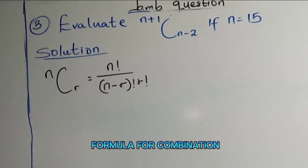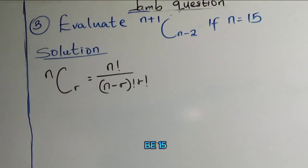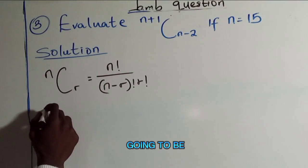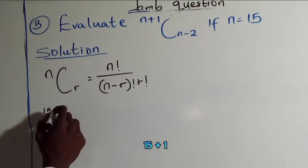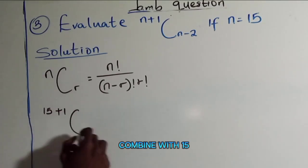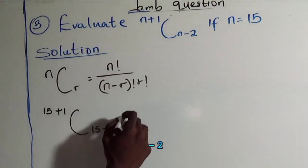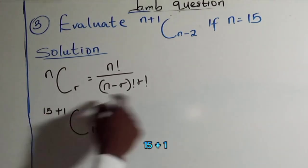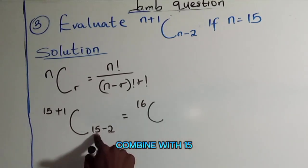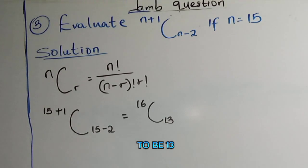We have been given n to be 15, so we substitute: that gives us 15 plus 1 combined with 15 minus 2, which is 16 combination 13.